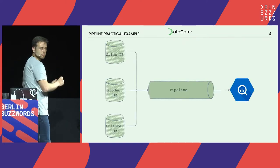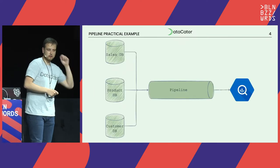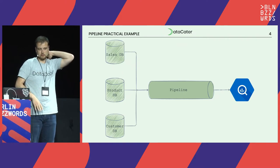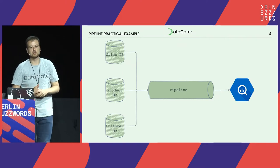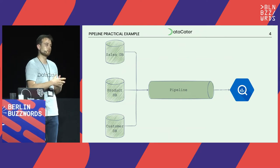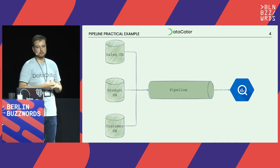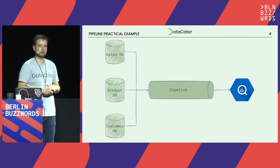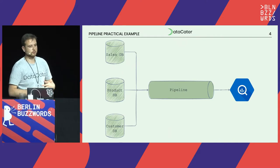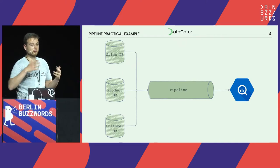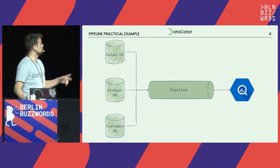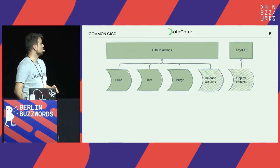Just to be clear, whenever I talk about ETL or data pipelines, in a nutshell, this is it. We have different data sources and often what we want to do is put it into a data warehouse or an analytics database, maybe put it into another application database to provide a REST API. This is one of the most common things we see right now.